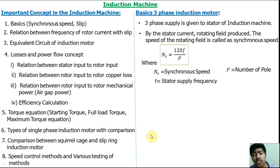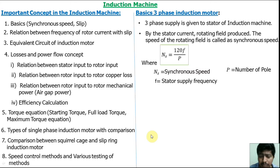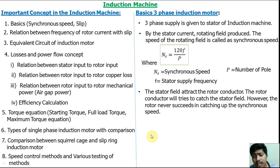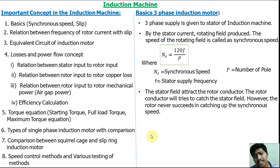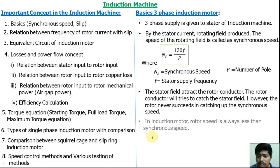Where Ns is synchronous speed, P is the number of poles, and f is the stator supply frequency. The stator field attracts the rotor conductors. The rotor tries to catch the stator field but cannot, so the rotor rotates. The rotor speed in the induction machine is always less than the synchronous speed.